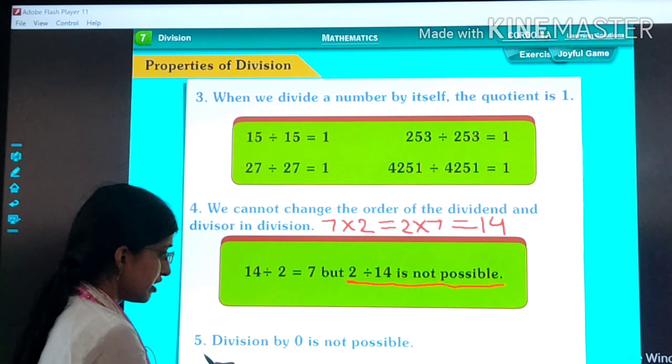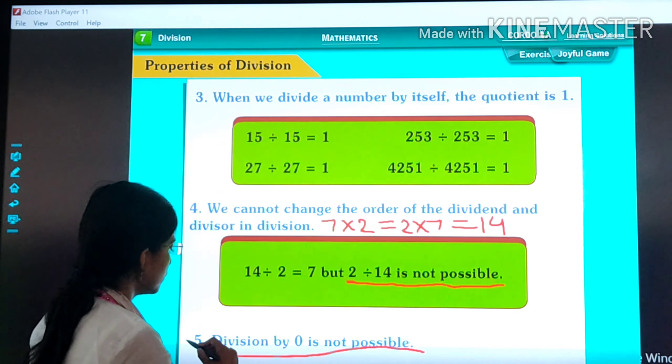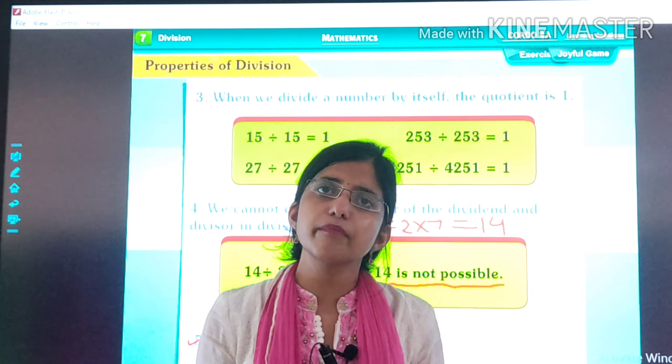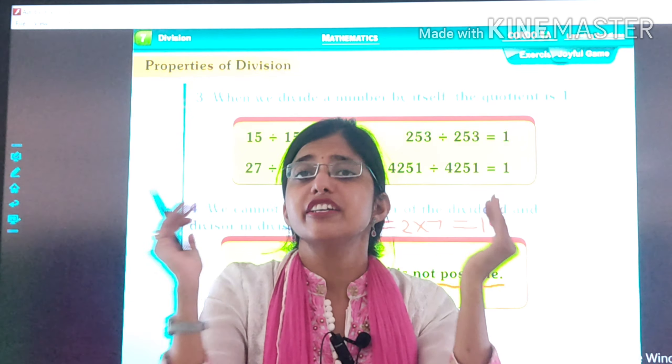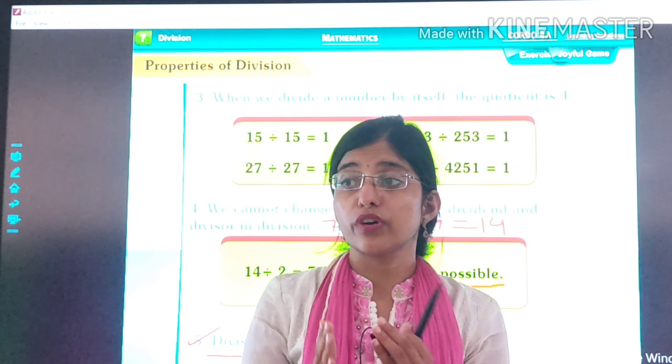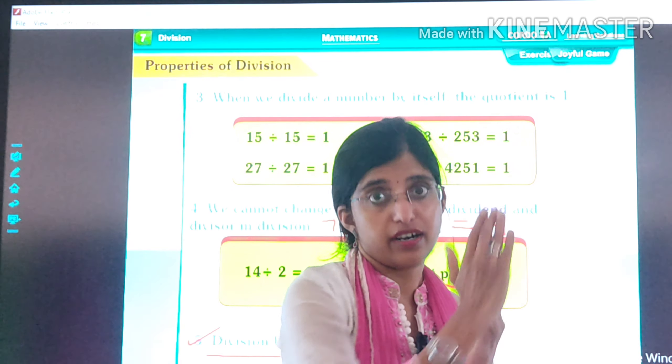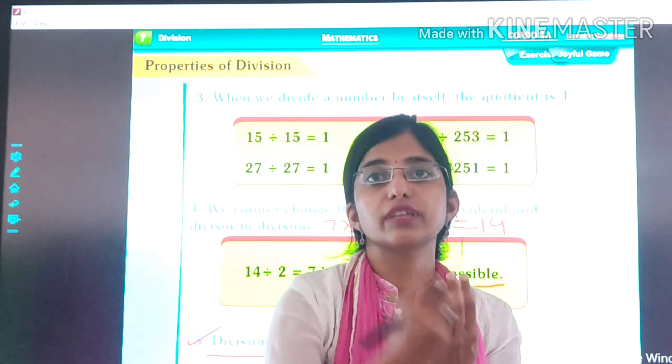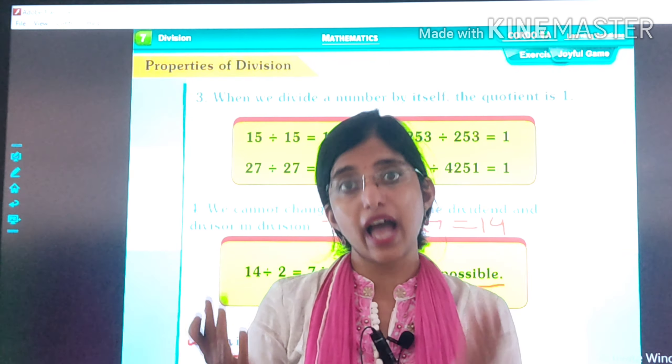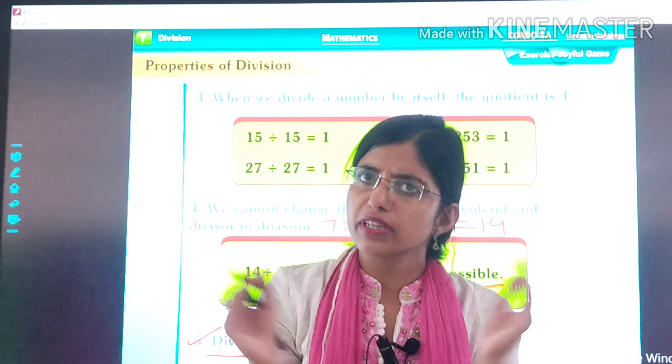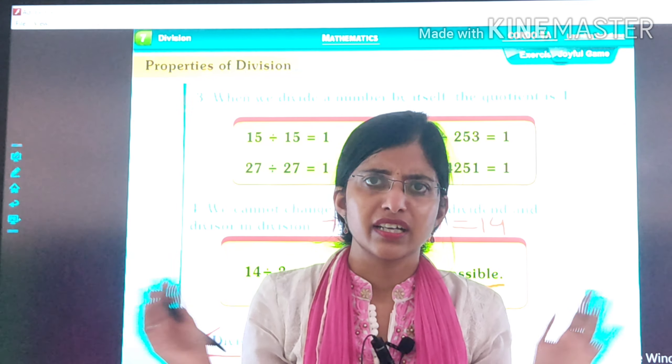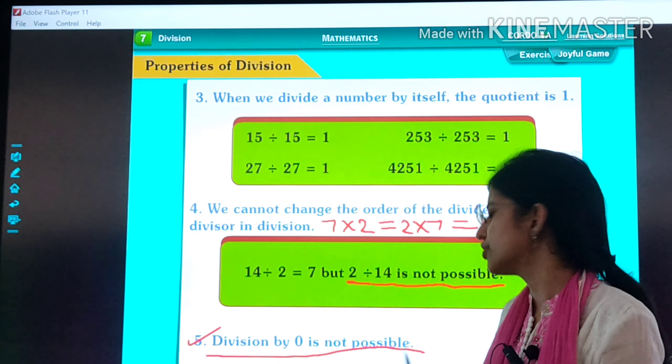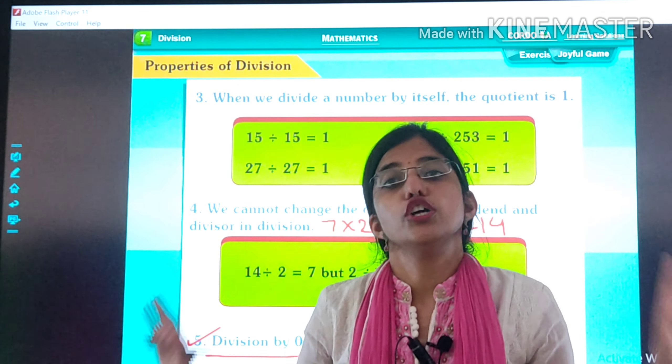Last, division by 0 is not possible. We cannot divide by 0. Why? Because 0 is nothing. Division means what? To share something, to divide something. If I have 4 apples, I can give one apple to everyone. I'm dividing my apples. But 0 means nothing. So how can we divide it? We cannot divide it. That's why division by 0 is not possible.